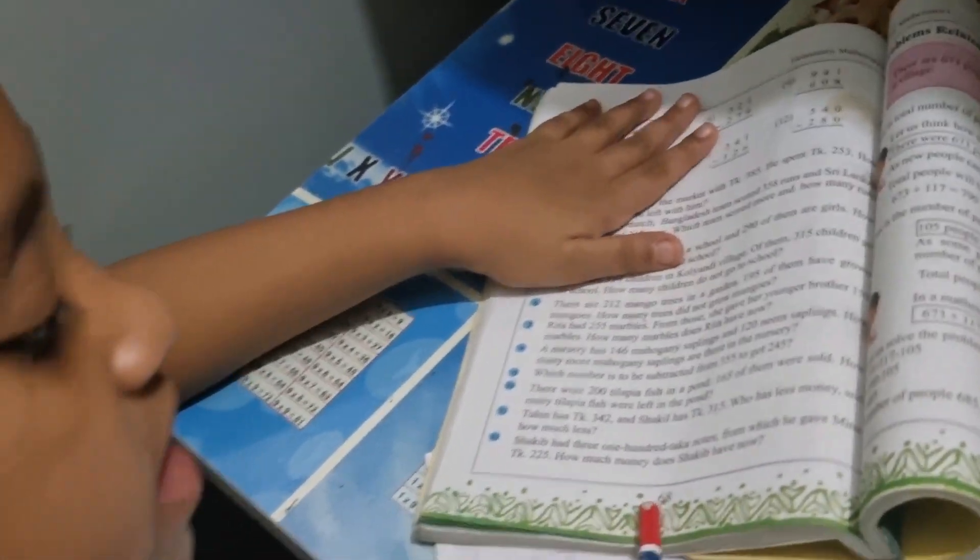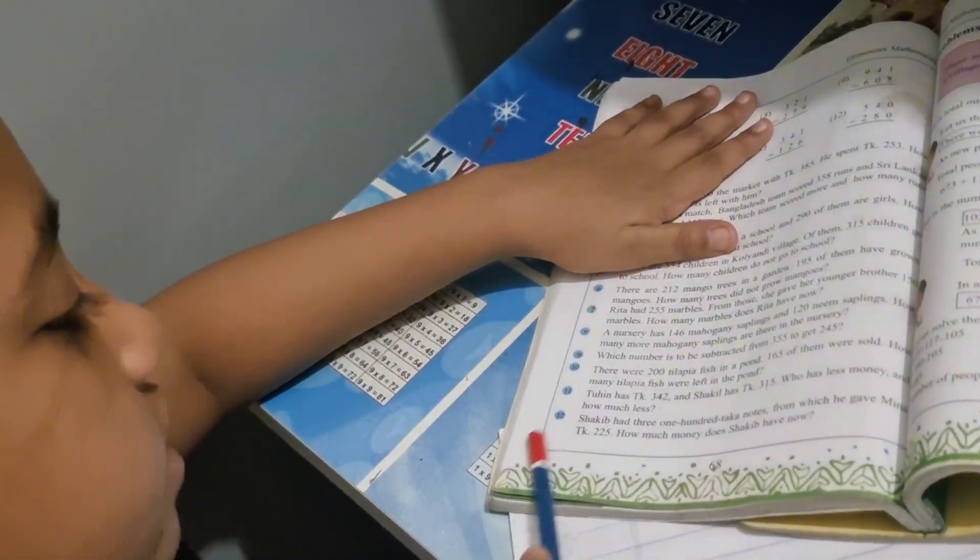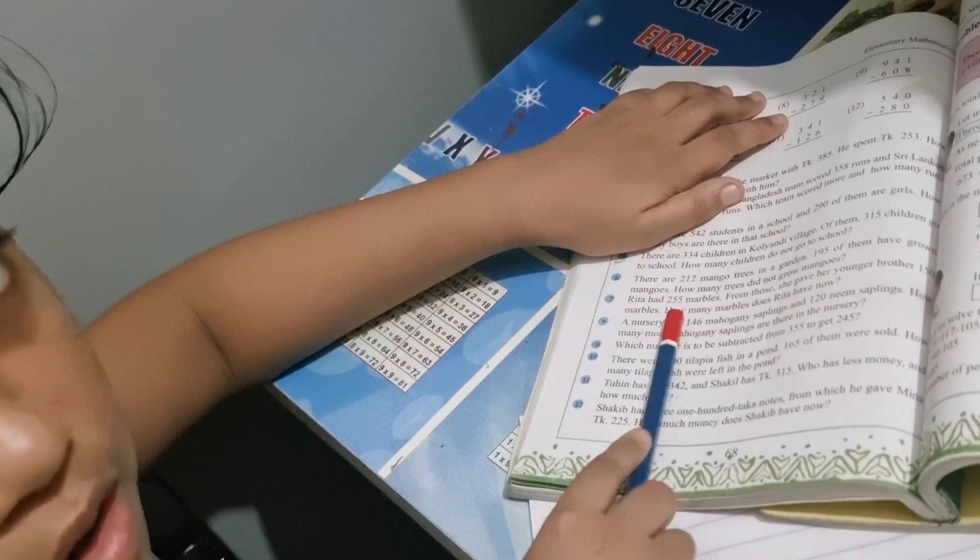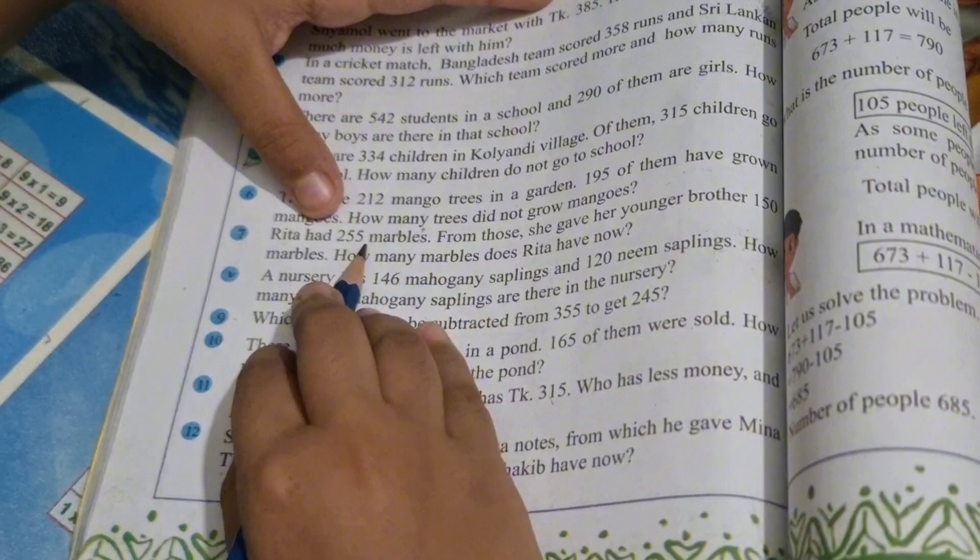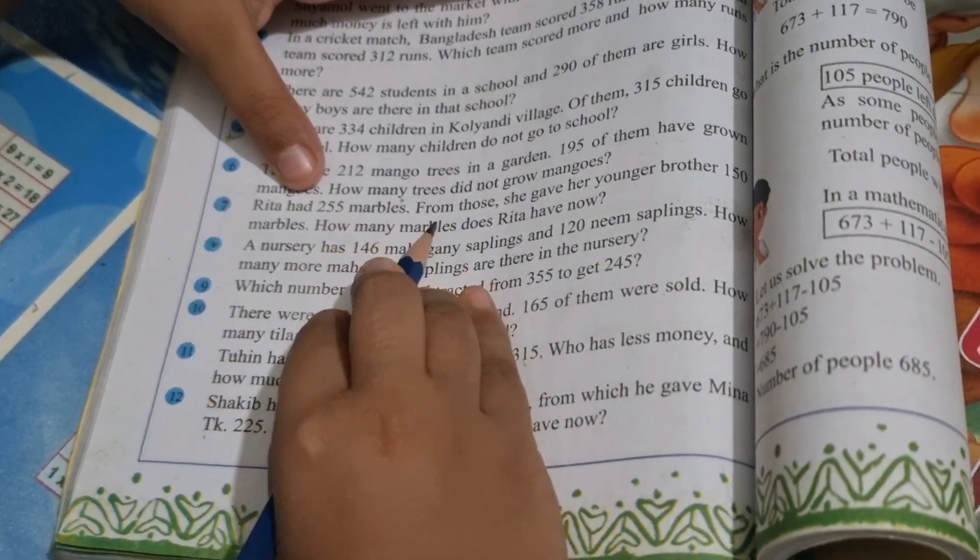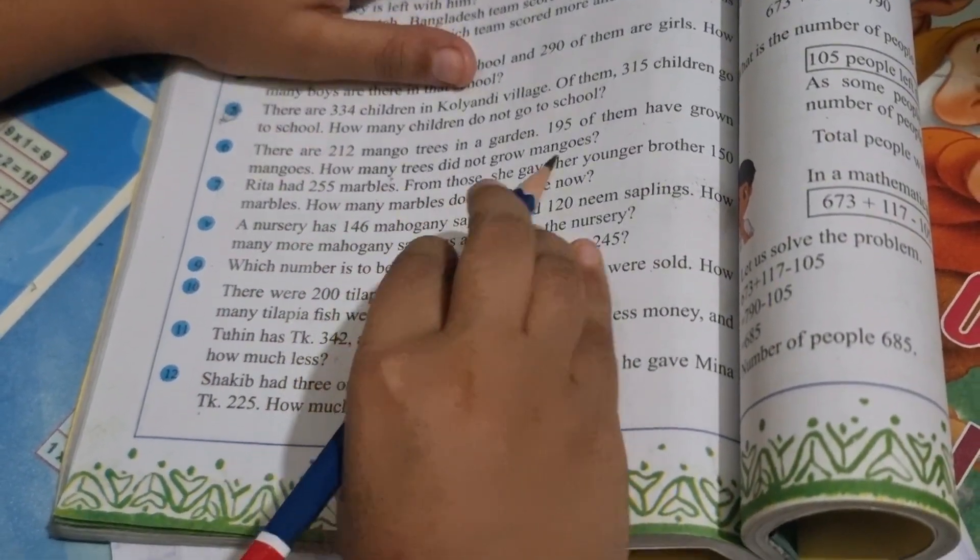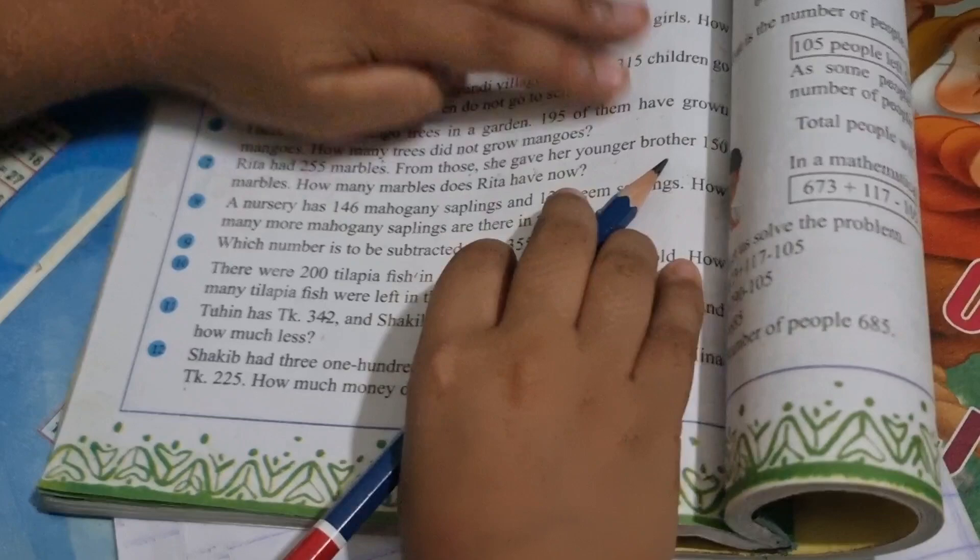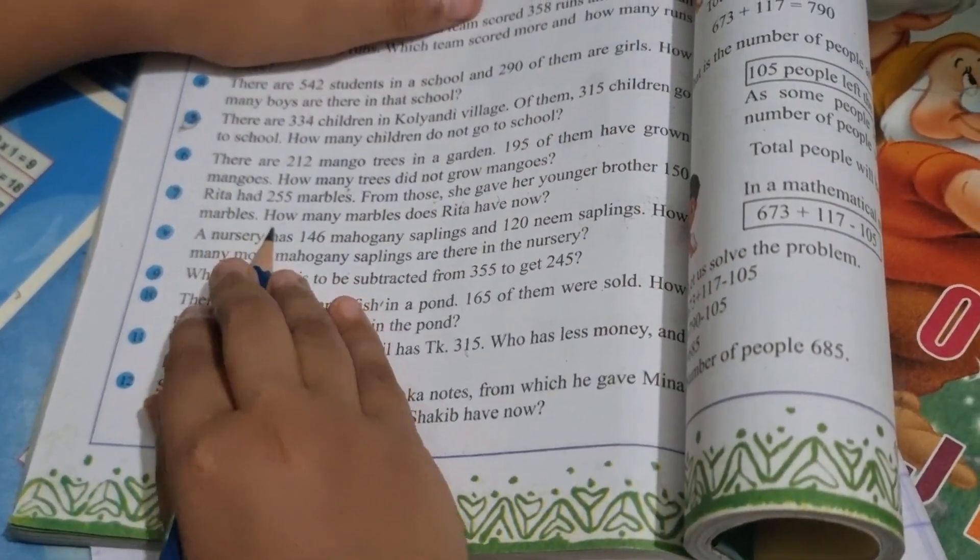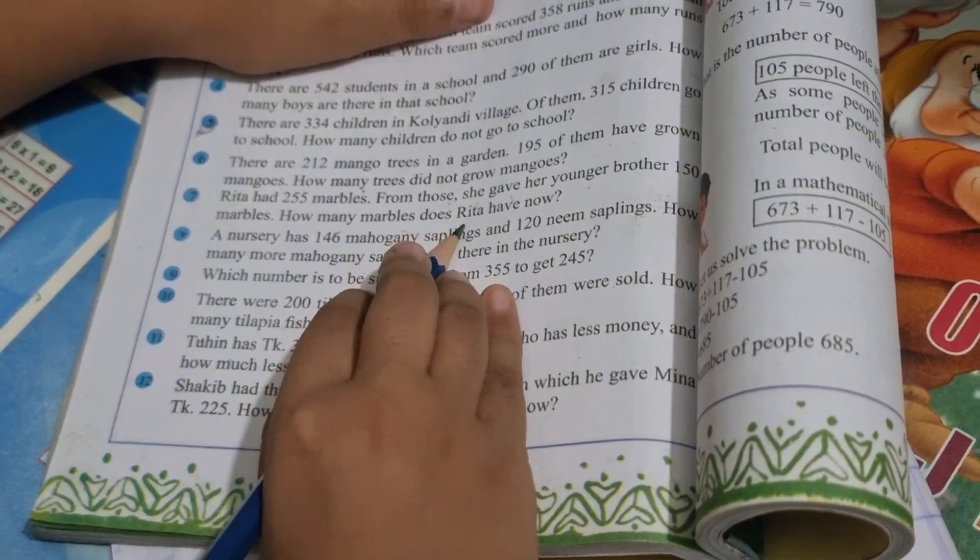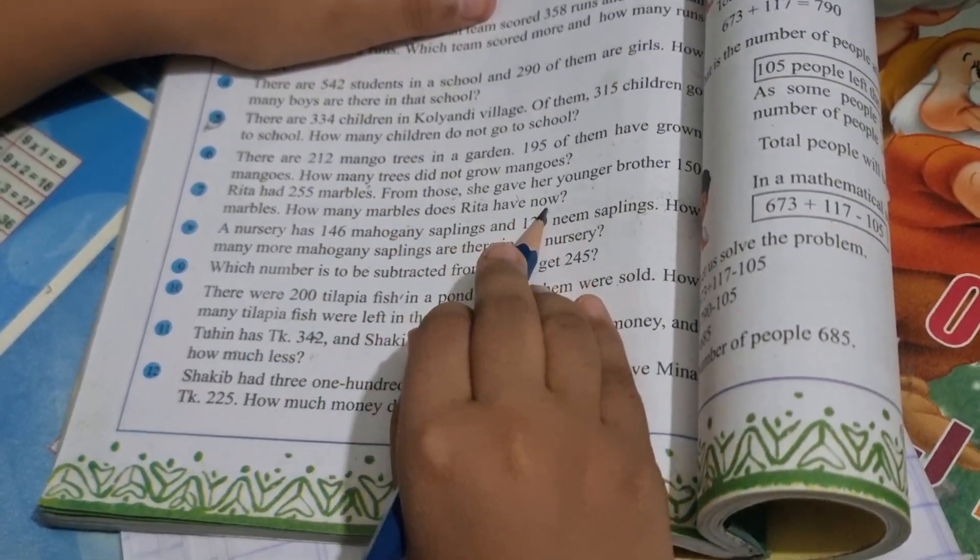Okay everyone, today I will do page 68, problem number 7. Let's get started. Rita had 255 marbles. From those she gave her younger brother 150 marbles. How many marbles does Rita have now?